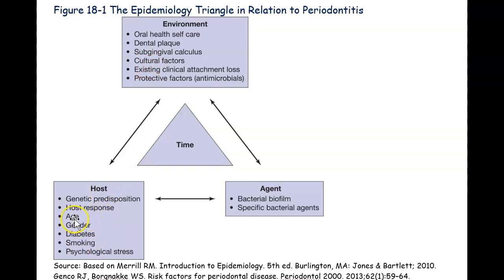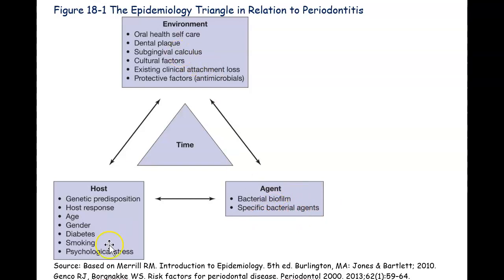We also look at the host — what age and gender are they, do they have diabetes, are they smoking? We know smoking plays a huge role in periodontitis. Are they under stress? These are all links to getting periodontitis. Then there's the agent — the actual item causing the disease: biofilm, plaque, bacteria. It's not just bacteria alone or plaque alone that causes periodontitis; it's multifactorial.